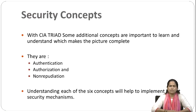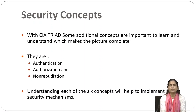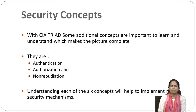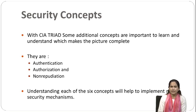We have seen in the last lecture that three things are important in any information security system: confidentiality, integrity, and availability — called the CIA triad. Now, with this CIA triad, some additional concepts are there which we need to understand, and which are important to learn to understand the system. These three additional concepts help us to make the complete picture of our information security system.